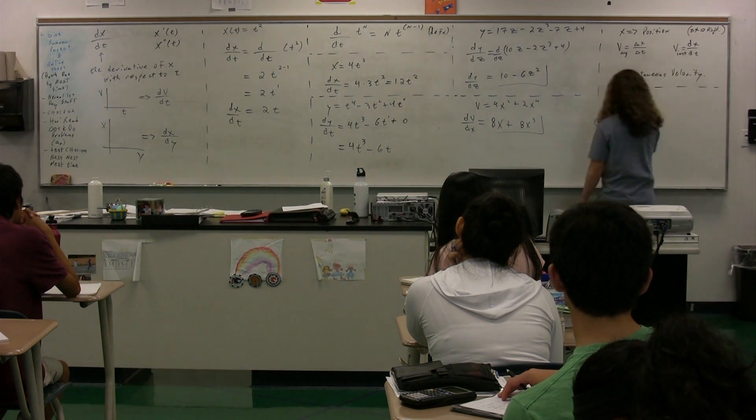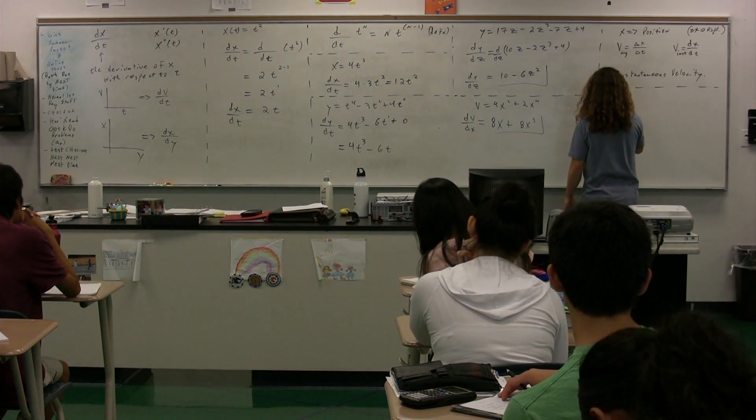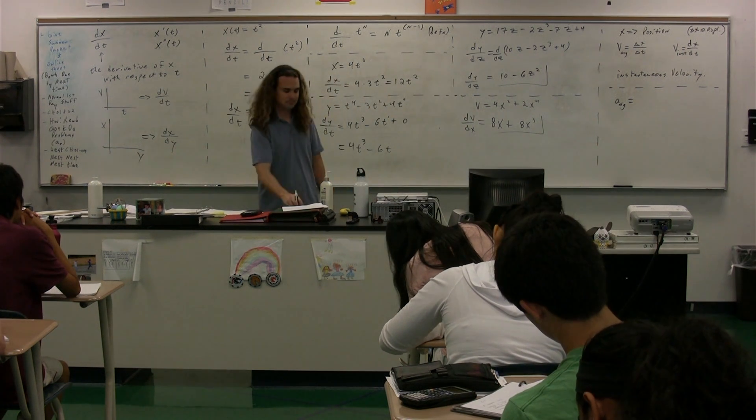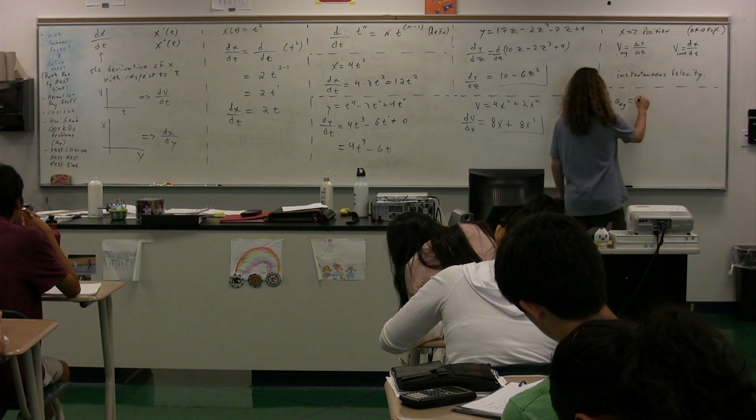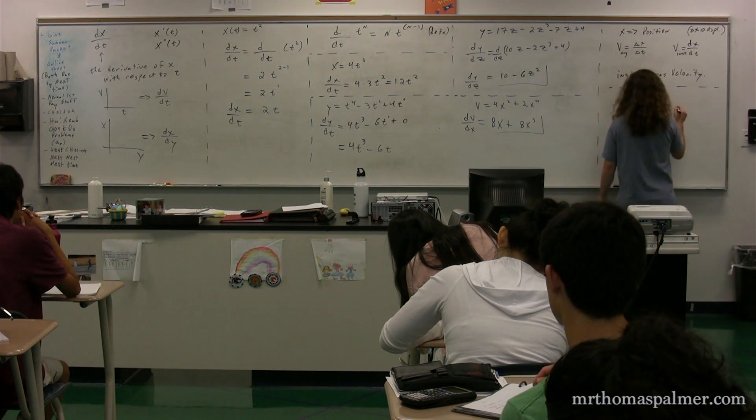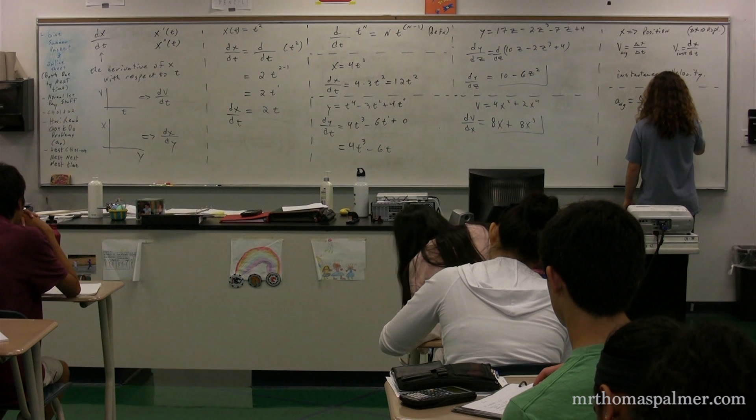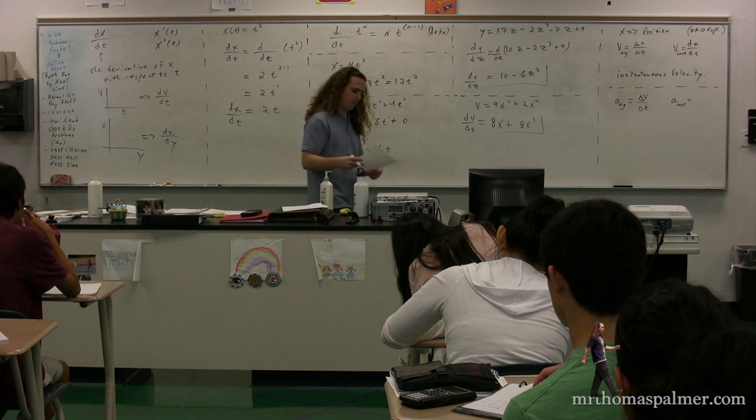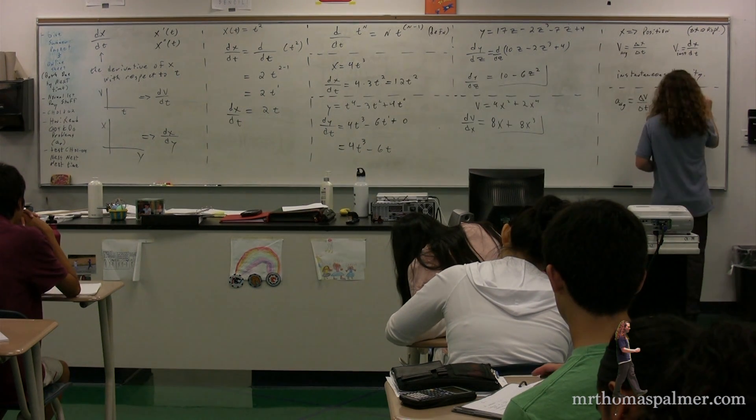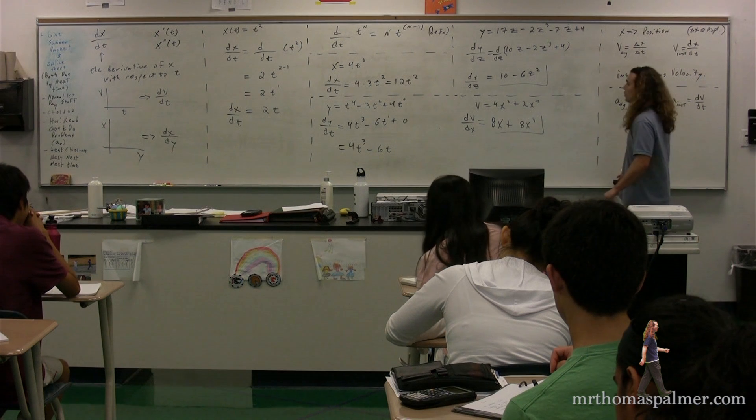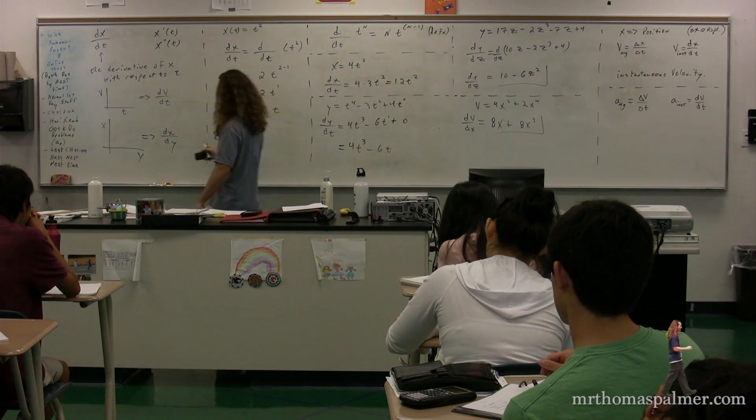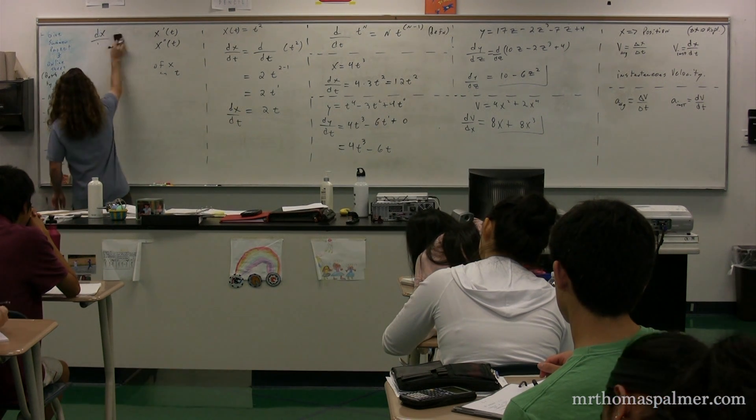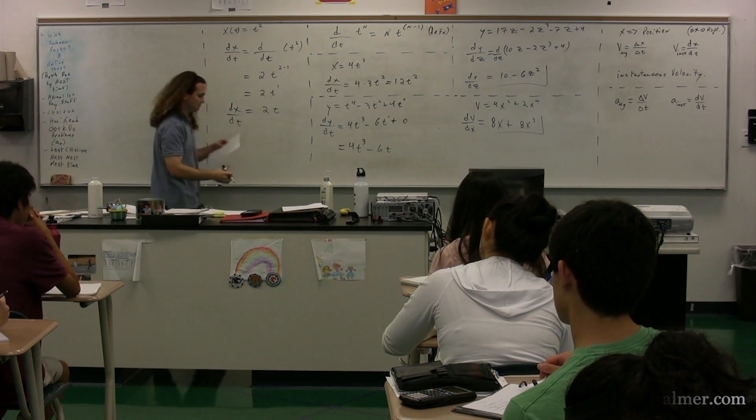We can do the same thing with acceleration. What is the equation for average acceleration? Average acceleration, please. Cheryl? That would be the change in velocity over change in time. And the equation for instantaneous acceleration, then, would be... The derivative of velocity as a function of time. So the change in position of change in velocity over time, give you an average. Whereas, when you take the derivative, it gives you an instantaneous velocity and the acceleration at specific points in time.